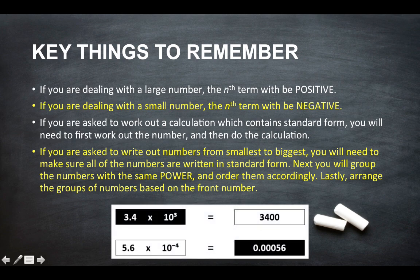So here is a quick example. So we've got 3.4 times 10 to the power of 3. Because this nth term is positive, we know that the number is going to be bigger. So we're going to move this 3 spaces to the right in order to give us 3,400.